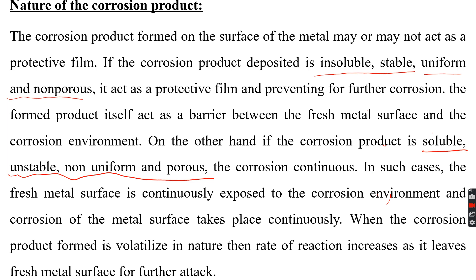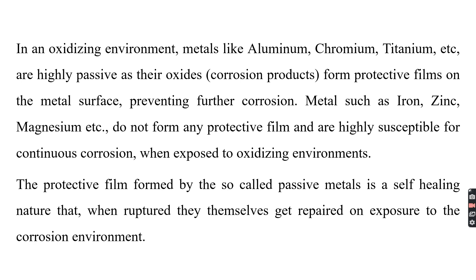Sometimes the formed product itself is volatile in nature, so the rate of corrosion increases because as soon as the product is formed it volatilizes, leaving a fresh metal surface for further attack. Metals like aluminum, chromium, and titanium — called passive metals — form a stable oxide layer that acts as a protective film. Even if that oxide layer ruptures, they possess a self-healing nature; they interact with the atmosphere again, forming a stable oxide layer that acts as a barrier between the metal surface and the corrosion environment.